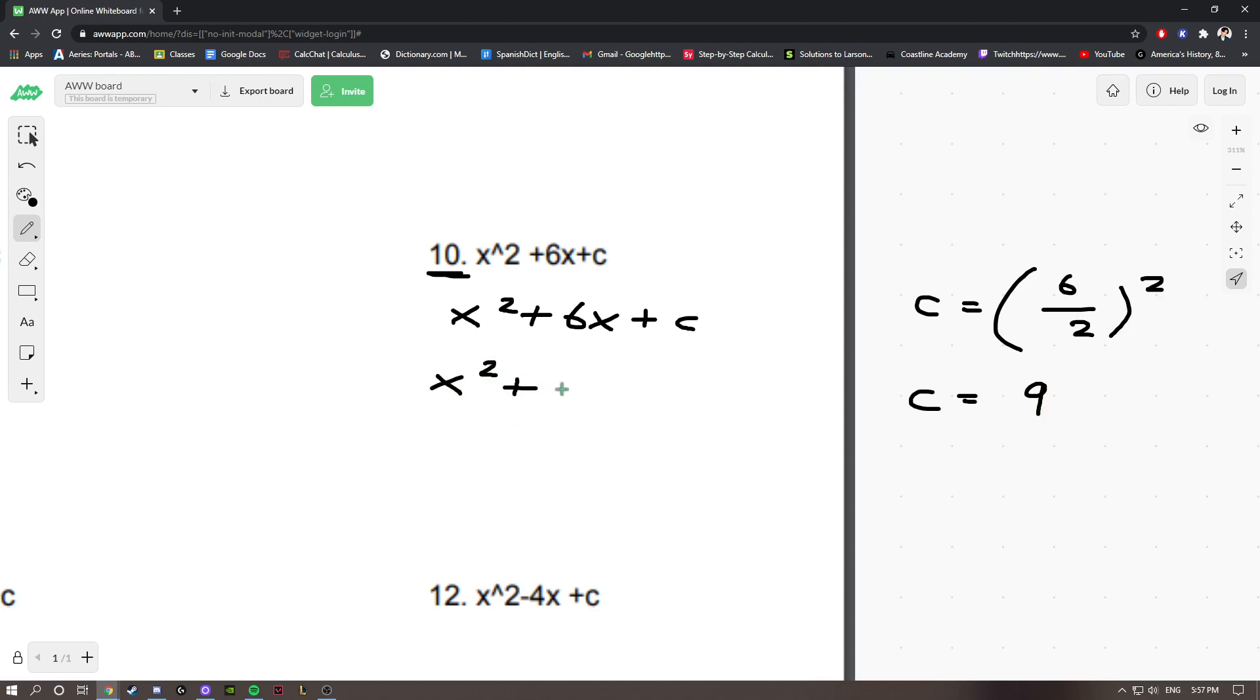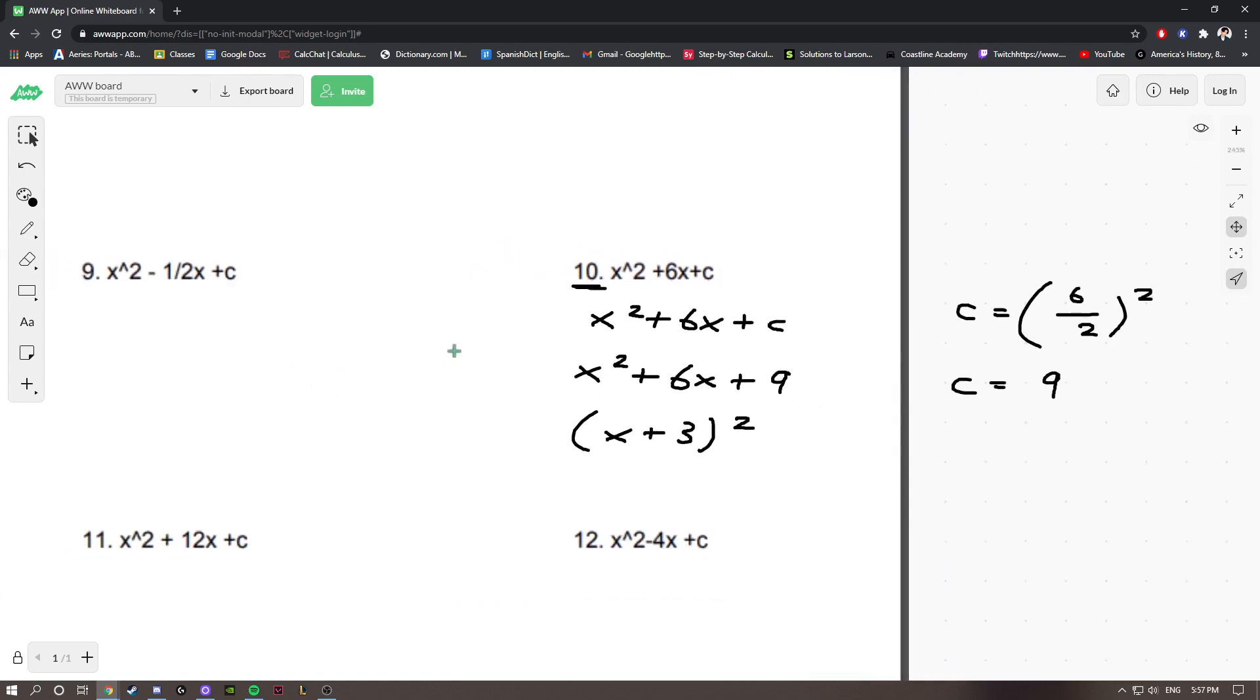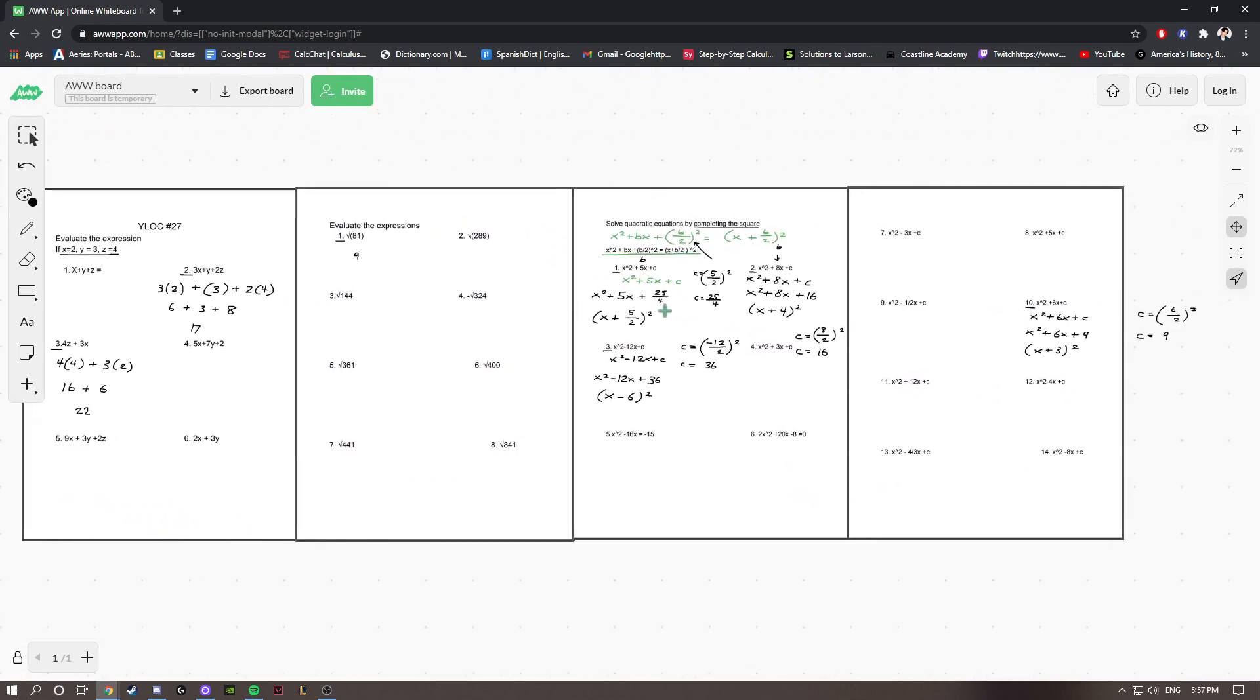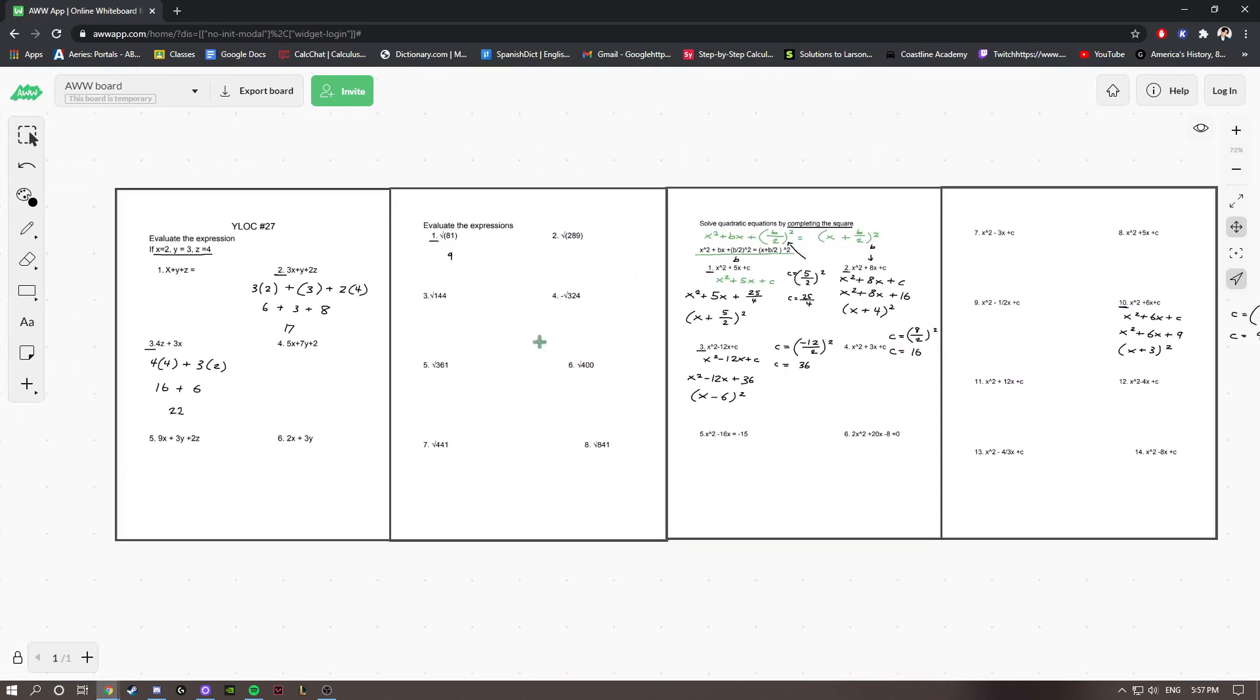x squared plus 6x plus 9. And, this will simplify to x plus 3, the entire thing squared. So, not that difficult, what we learned today. It was a pretty quick lesson. I hope it was helpful, and thank you for watching.